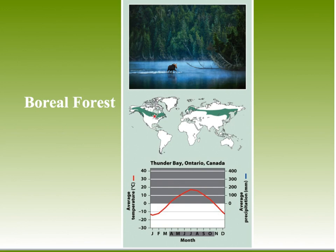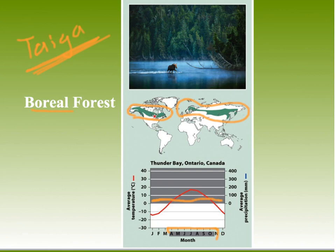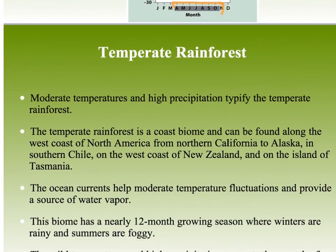The boreal forest is also known as the taiga — same thing. It spreads across higher latitudes just below the Arctic, making it a sub-Arctic biome. The climate graph from Ontario, Canada, shows temperature and precipitation under about 100 millimeters per month. The growing season is a little longer than the Arctic, and because of the greater plant life, the boreal forest supports more animal life as well.